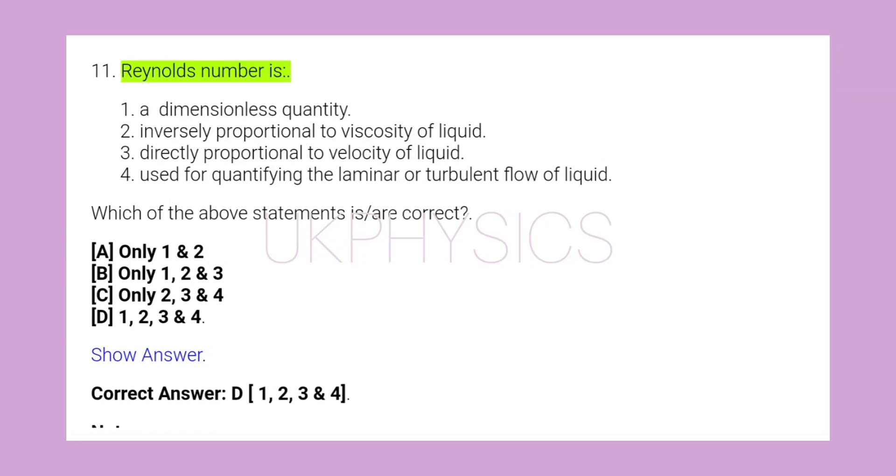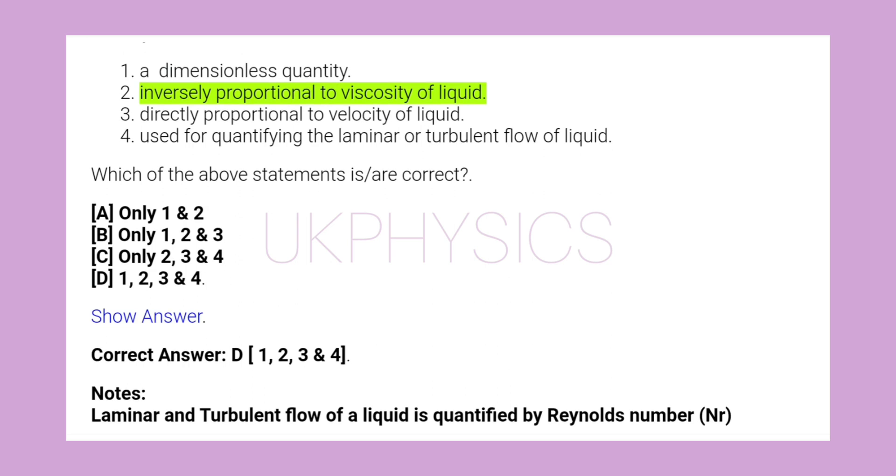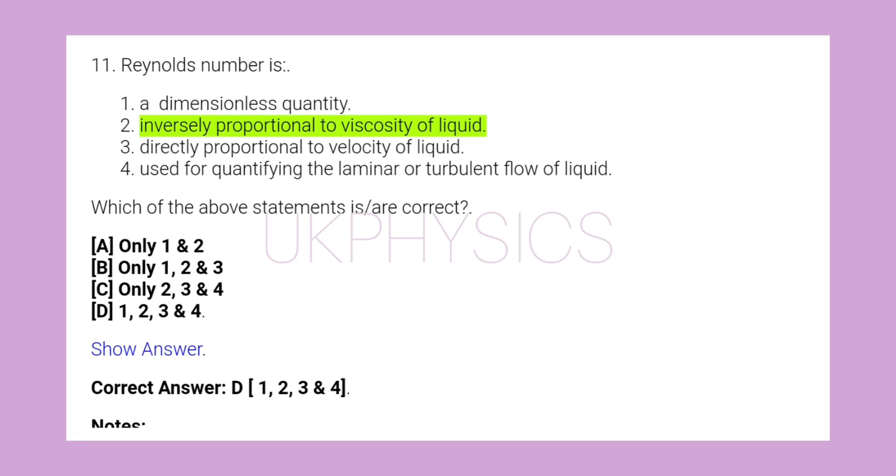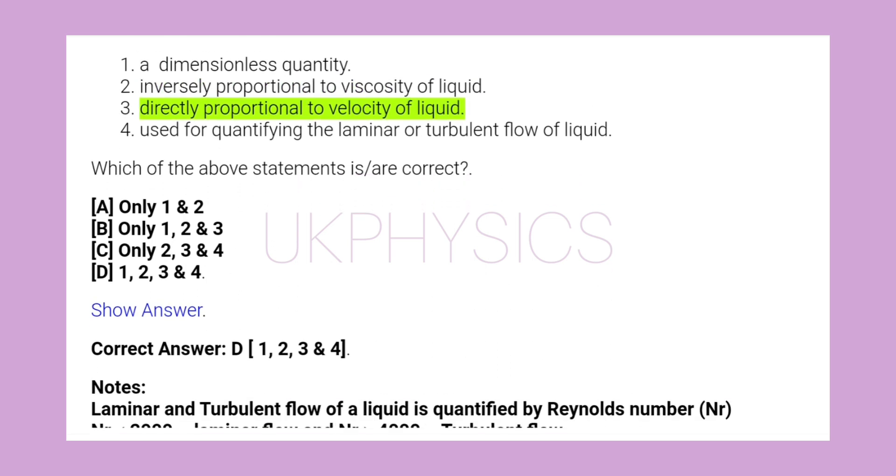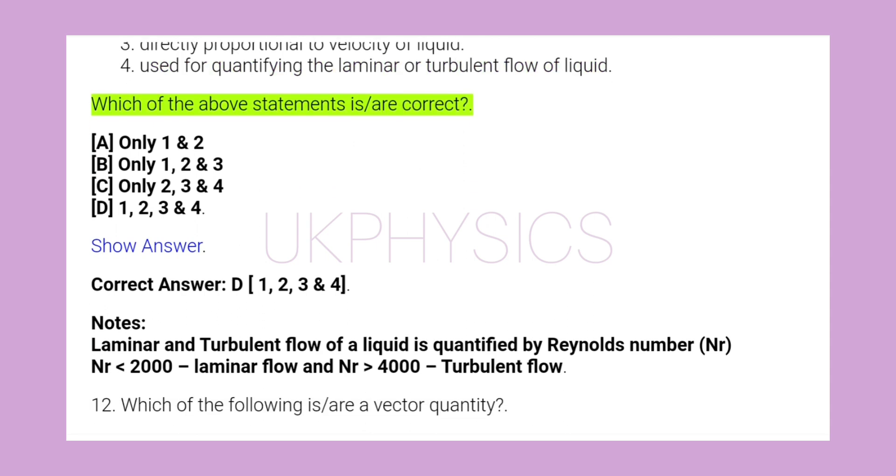Reynolds number is a dimensionless quantity, inversely proportional to viscosity of liquid, directly proportional to velocity of liquid, used for quantifying the laminar or turbulent flow of liquid. Which of the above statements is or are correct?